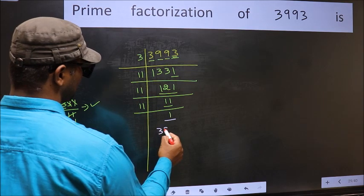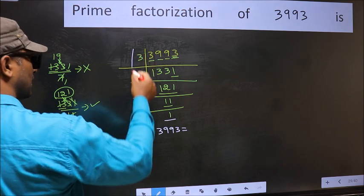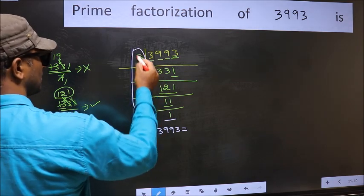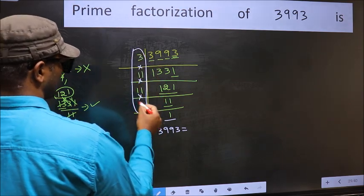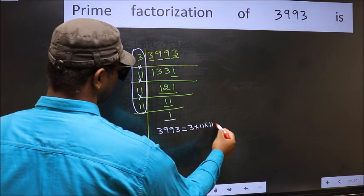So the prime factorization of 3993 is the product of these numbers: 3 times 11 times 11 times 11.